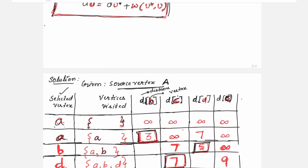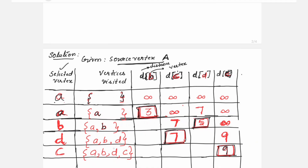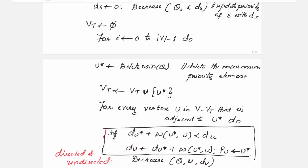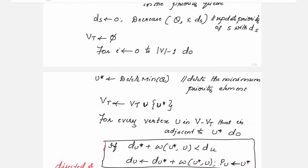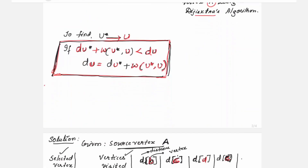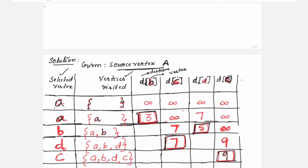In the second step B is added. This way you write all vertices under the visited vertices column. In the pseudocode, the second line performs VT union u* — u* is the finalized selected vertex, which gets included in the visited vertices.